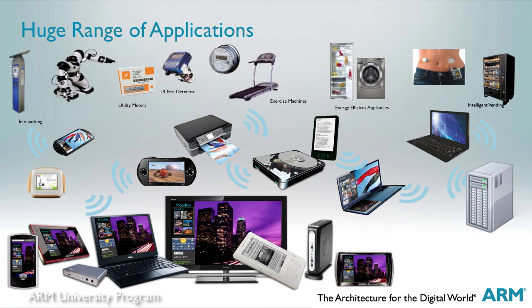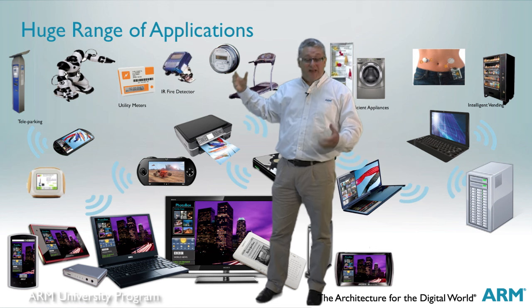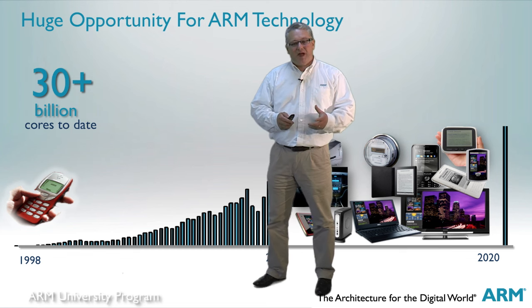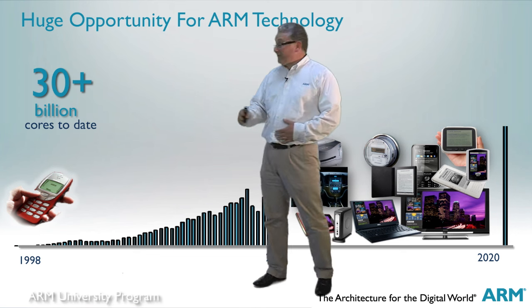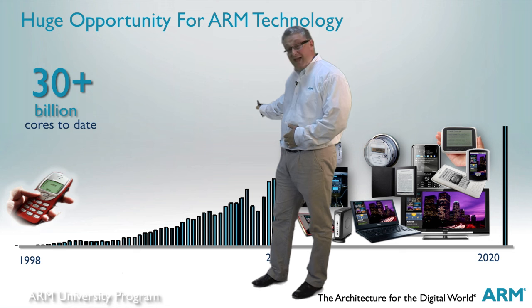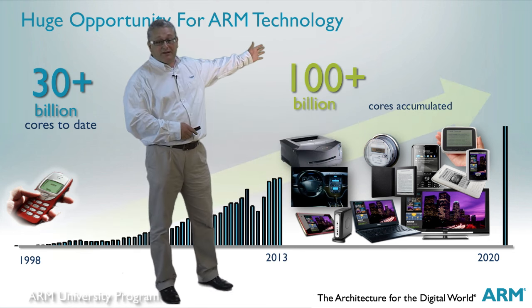Here you can see just some of the huge range of applications in which ARM-based solutions are deployed — everything from hard disk drives to printers, from gaming devices to smart meters, washing machines and televisions. The list is really endless and it's growing all the time. To date, a total of over 30 billion cores have shipped, and the number's growing at a rate of about 8 billion a year. The total is predicted to exceed 100 billion by 2020.